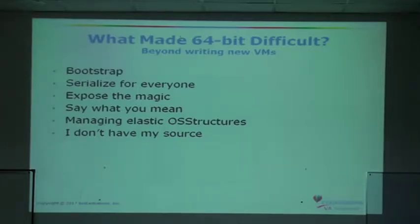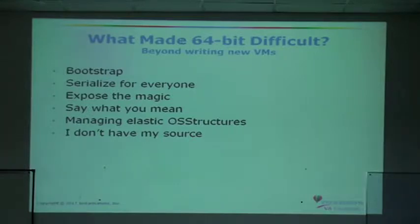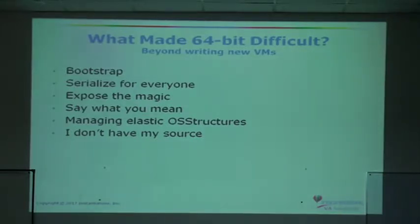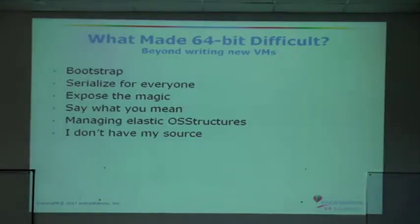So here we are — we have a new 64-bit VM, we start our image up, and nothing works. That's because we haven't adapted the image for 64-bit. It's the same old 32-bit image. So what did we have to do to the image to make it run in 64-bit? We did work in bootstrapping the image, serialization, exposing the magic, and updating the system so that you must say what you mean when making external calls.